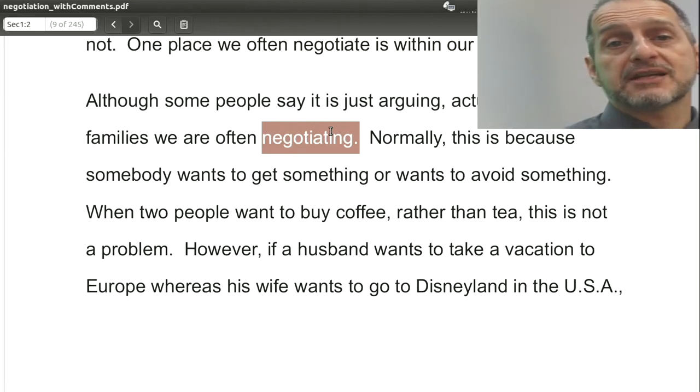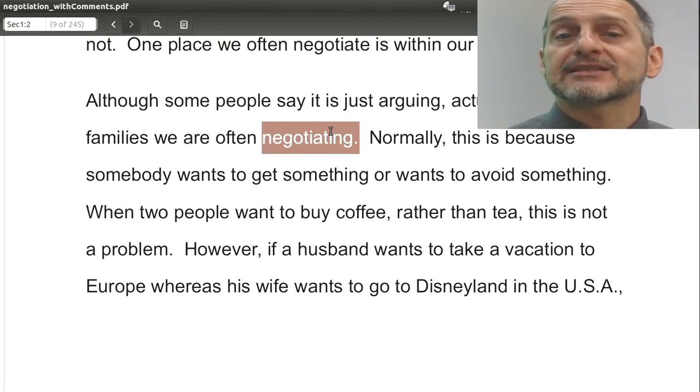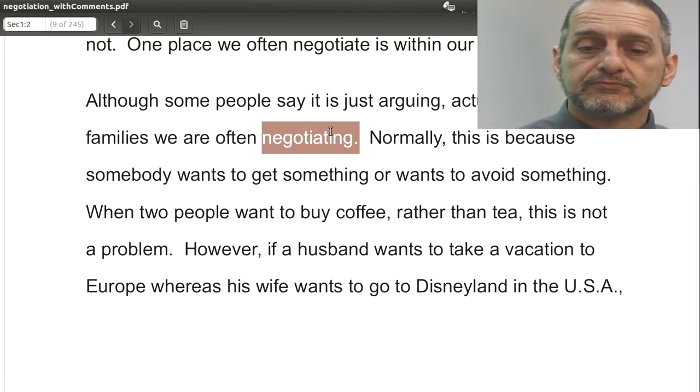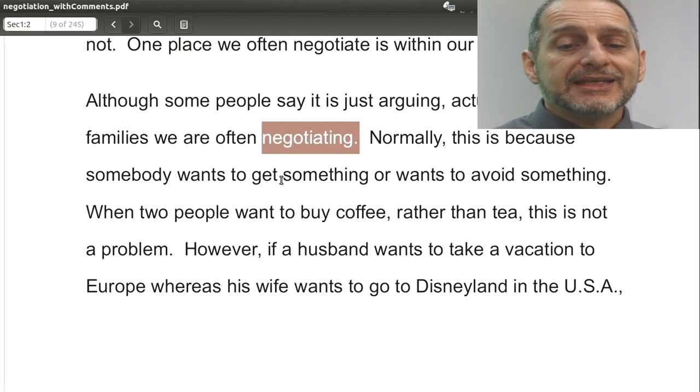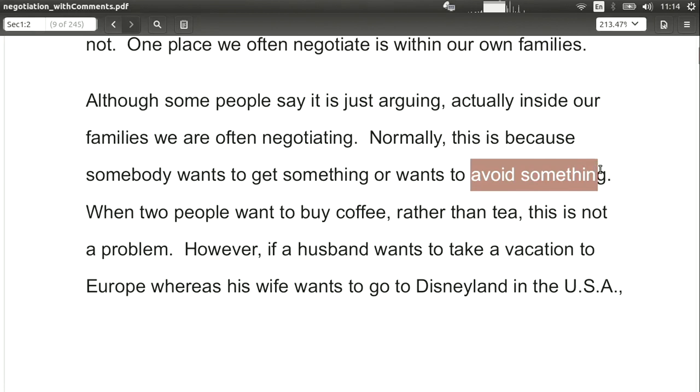Now when we say satisfies both parties, we don't mean both groups get everything they want. That's not the case. And we're going to talk about that in future chapters. In any case, what we're talking about here specifically is that somebody wants to get something or wants to not get something or avoid something.